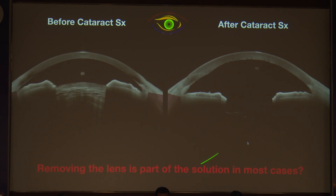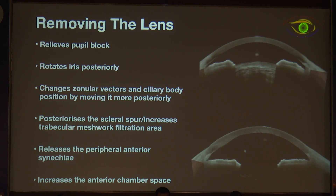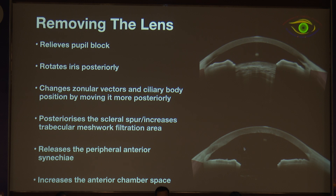Removing the lens relieves the pupillary block, rotates the iris posteriorly, the zonules fall back posteriorly, the ciliary body falls back posteriorly, and the scleral spur falls back posteriorly. If there is a peripheral anterior synechiae, the anterior synechiae breaks and there is an increase in anterior chamber space. The scleral spur falling back actually widens the trabecular meshwork pores.